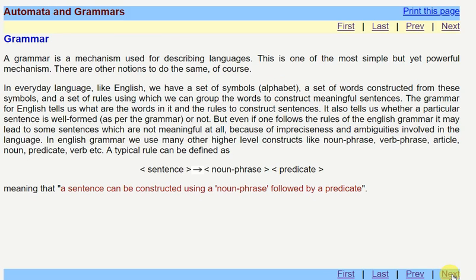Now what is a grammar? A grammar is a mechanism which is used for describing languages. For example, you speak any language like English, Hindi, or any other regional language. For every language, there is some set of rules.